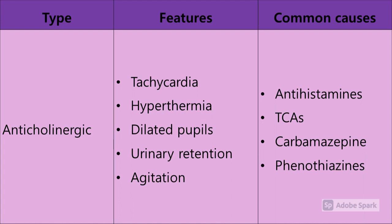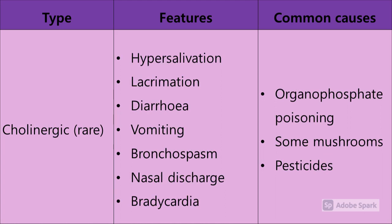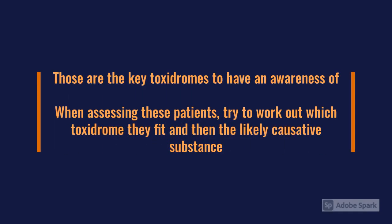The anticholinergic toxidrome is seen with antihistamines, tricyclics, and things like carbamazepine. On the flip side, the cholinergic toxidrome is actually very rare - organophosphate poisoning is the main cause, also some mushrooms and pesticides. These patients hypersalivate, lacrimate heavily, have diarrhoea, vomiting, bronchospasm, and profuse nasal discharge, and are often very bradycardic. Atropine is the go-to drug, in much higher doses than used for bradycardia - often two or three milligrams.